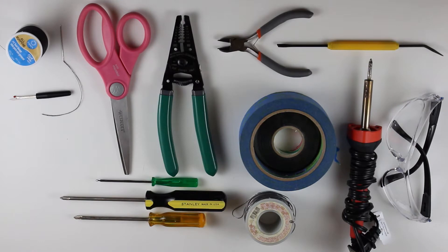You're going to need a sewing kit, seam ripper, scissors, wire strippers, pliers, electrical tape, scotch tape, soldering iron, safety glasses, various screwdrivers, and of course solder itself.